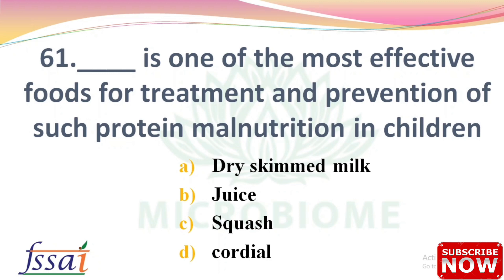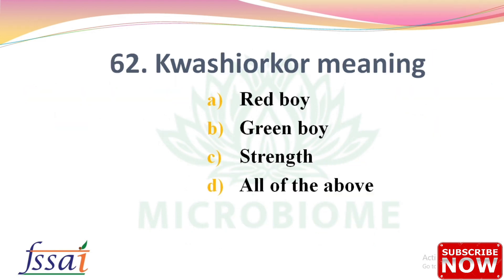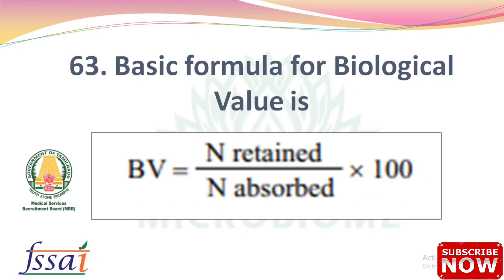Next: Dash is one of the most effective foods for treatment and prevention of protein malnutrition in children — options: dried skimmed milk, juice, squash, cordial. The right answer is option A, dried skimmed milk. Next: Kwashiorkor meaning — options: red boy, green boy, strength, all of the above. The right answer is option A, red boy.